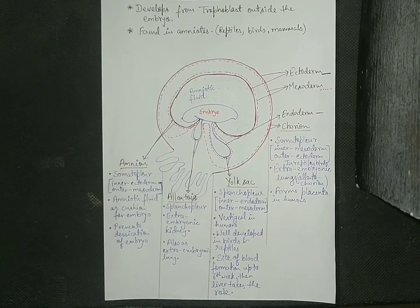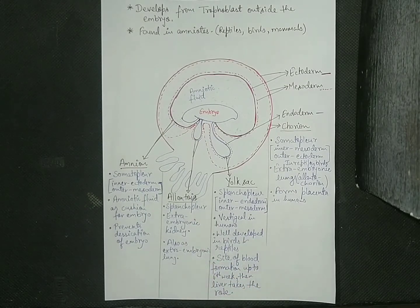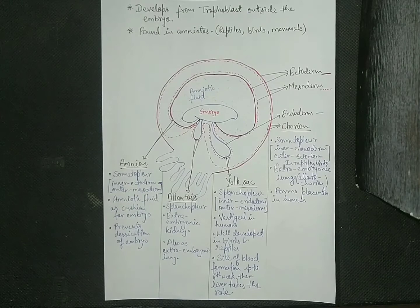The next extra embryonic membrane is allantois, and it is a fold of splanchnopleur. It means that the inner membrane is endoderm and the outer membrane is mesoderm. It acts as extra embryonic kidney and it also acts as extra embryonic lung. So allantois has two functions as a kidney as well as for lungs.